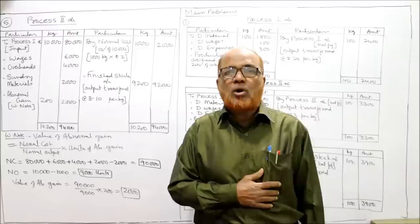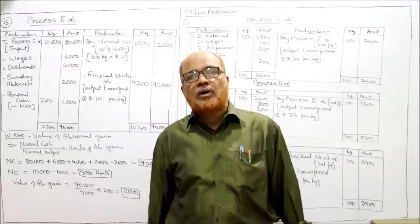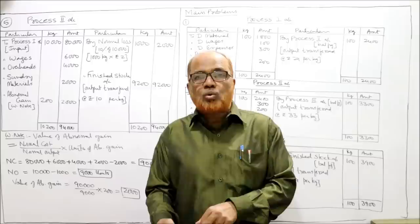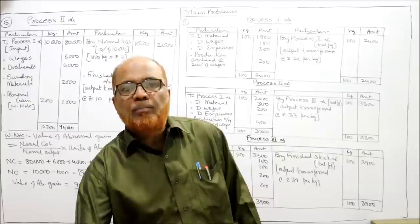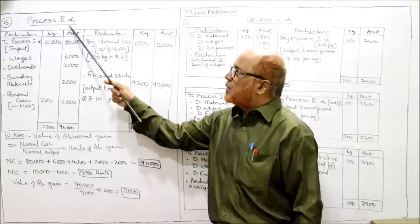Now we have to find out the value of abnormal gain. The wastage fetches 2 rupees per kilogram. So the normal loss wastage is sold at 2 rupees per kilogram. We need to prepare the Process 2 account. On the debit side, input comes from Process 1 account — 10,000 kg at 80,000 rupees.